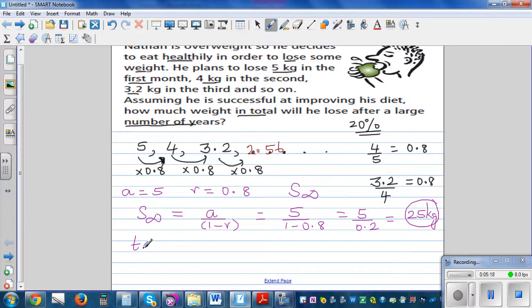...will follow this formula: tn is a times r raised to n minus 1. If you want to find the nth term of the sequence, you are going to use this formula where your a is 5. So tn in this case is going to be 5 times 0.8 raised to n minus 1. So let me show this on a calculator to show you slowly this will approach to zero.